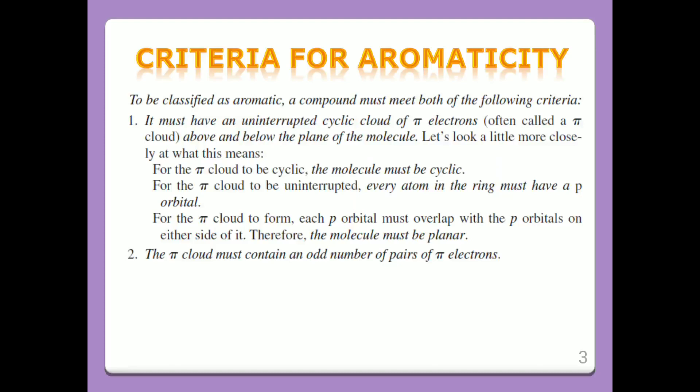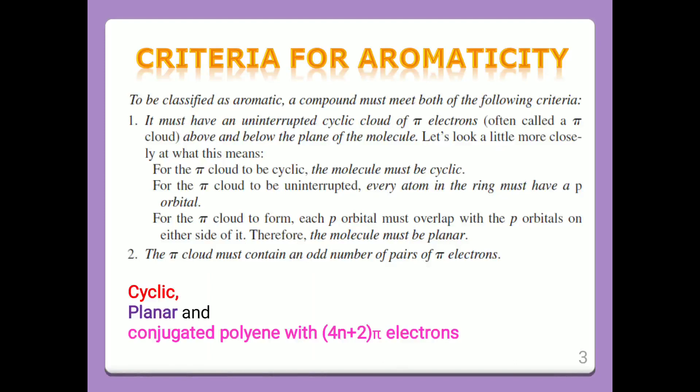Criteria 2: The pi cloud must contain an odd number of pairs of pi electrons — that is, it must be cyclic, planar, and a conjugated polyene with 4n+2 pi electrons. If the compound obeys the 4n+2 pi electron rule, it becomes an aromatic compound.